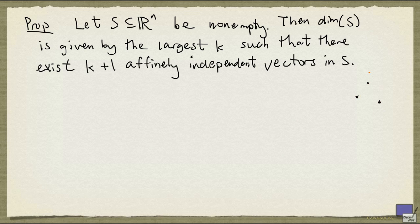For example, if you look at three points in R² arranged in a triangle, these can be shown to be affinely independent, and so in this case, k is going to be 2.